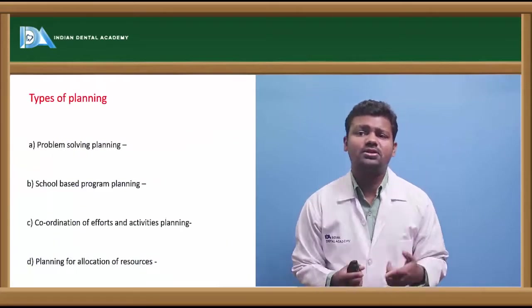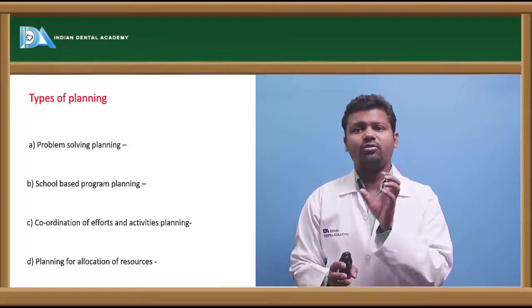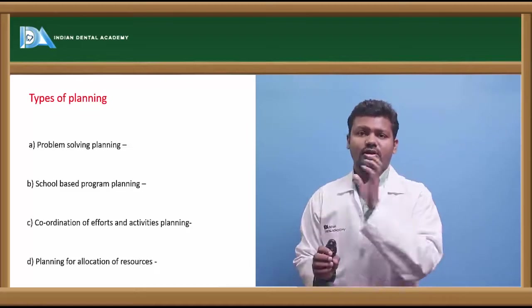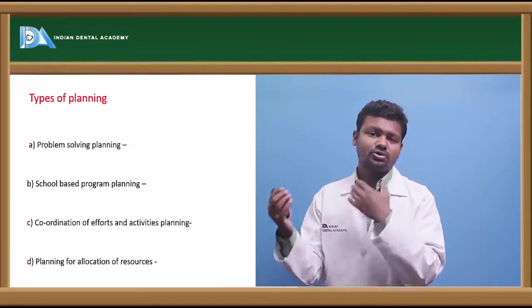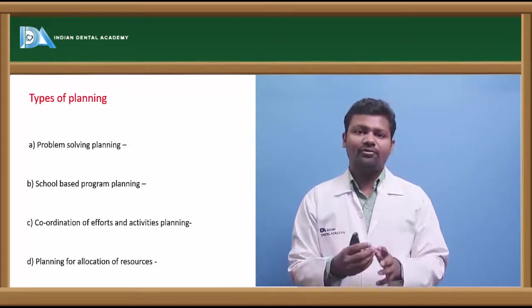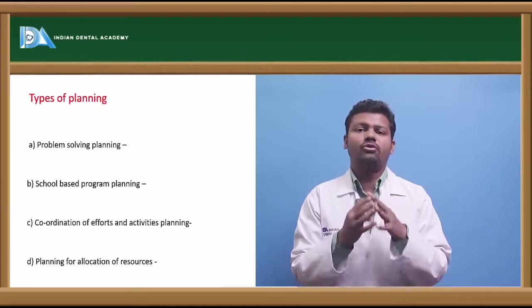Now there are various types of planning. First is problem solving planning. This type of planning is to solve a community problem. See, if there is a problem of fluorosis in a community, what we will do? We will plan a program so that the fluorosis can be stopped. So we can do that by defluoridation or will instruct people to have not to use fluoride in excess.